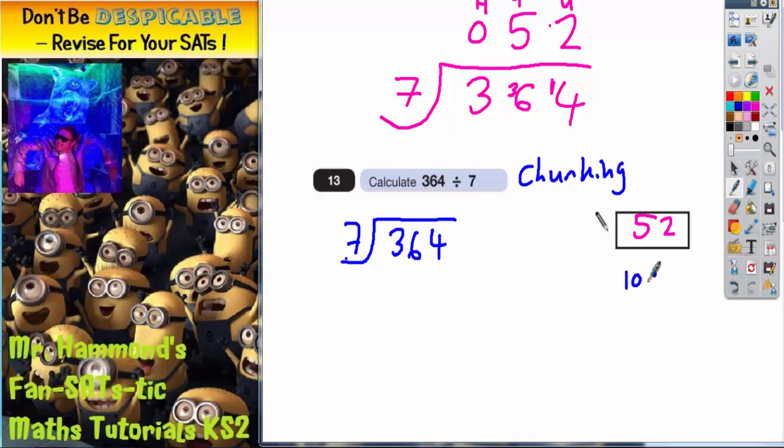10 lots of 7 would be a nice and easy chunk to do. That would have been 70. 20 lots of 7 is 140. So if I subtract 20 lots of 7, I'm subtracting 140. Let's see what that is. 4 subtract 0 is 4. 6 subtract 4 is 2. 3 subtract 1 is 2. So I'm down to 224.